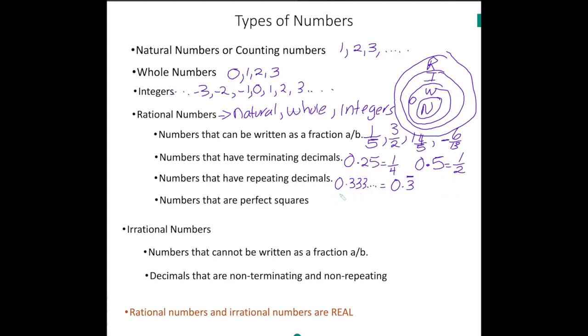Suppose I gave you 0.652, and my bar was over the 5-2. Once I see that bar, I know that this number is rational, because this number is 0.6525252, and it keeps going. So I know what the pattern will be.